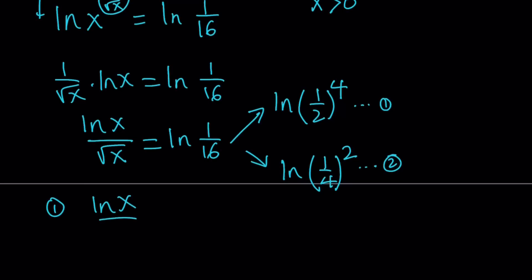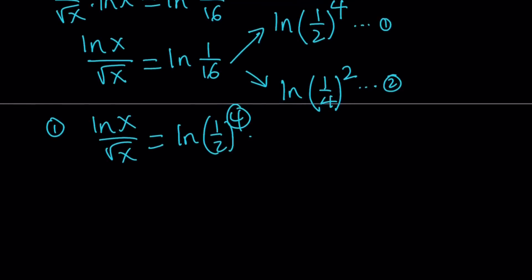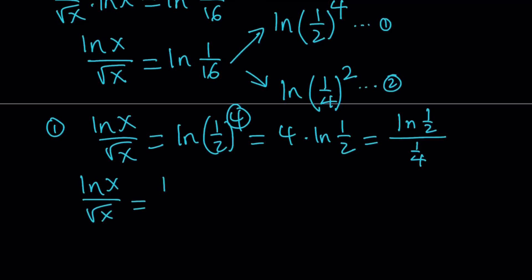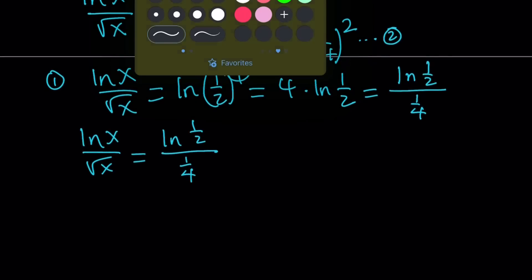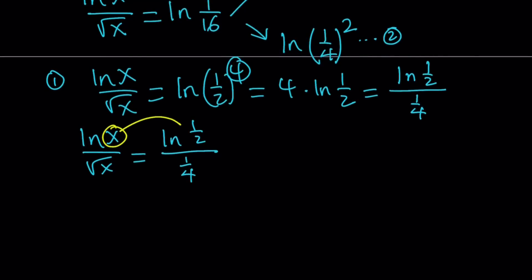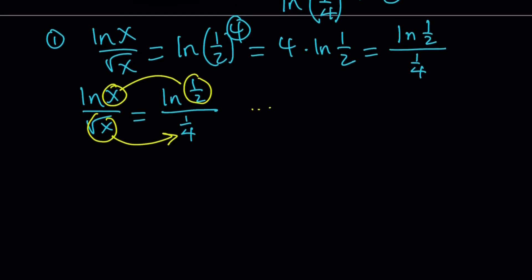Let's go with the first one first. If we write this as ln x over square root of x equals ln of 1 half to the fourth power, then I can move the 4 to the front: 4 times ln 1 half. Writing this as a quotient — ln 1 half divided by 1 fourth — we try to find a one-to-one correspondence. Can x equal 1 half and square root of x equal 1 fourth at the same time? The answer is no, it's just the other way around, so that tells you that number 2 is supposed to work.